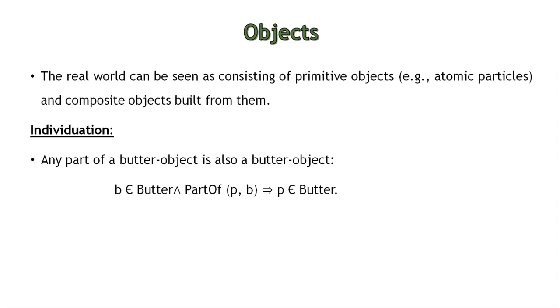In the real world we can see many objects consisting of primitive, that is atomic particles, and also composite objects which can be built from simple objects.